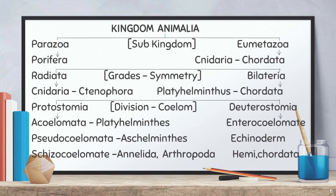Kingdom Animalia consists of all multicellular organisms. Since it is such a vast group, Kingdom Animalia is again classified into two sub-kingdoms: Parazoa and Eumetazoa. Parazoa includes organisms with cellular level of organization, while tissue level, organ level, and organ system level all belong to Eumetazoa. This classification is based on organization.